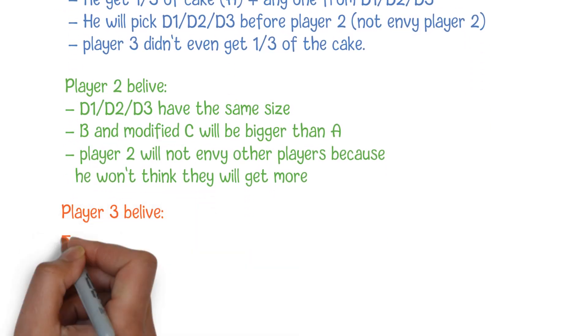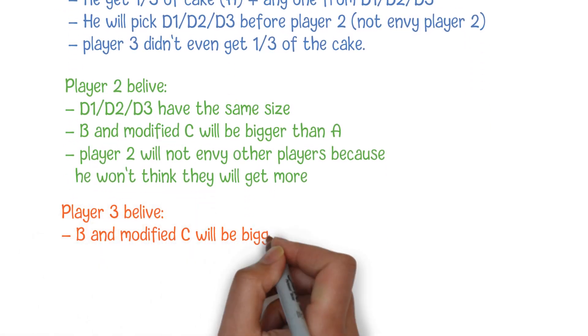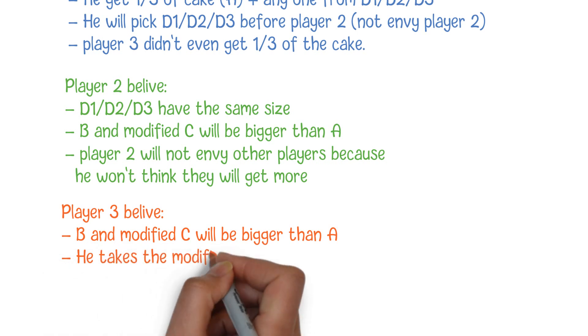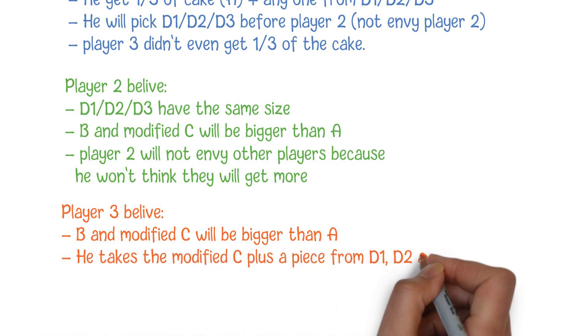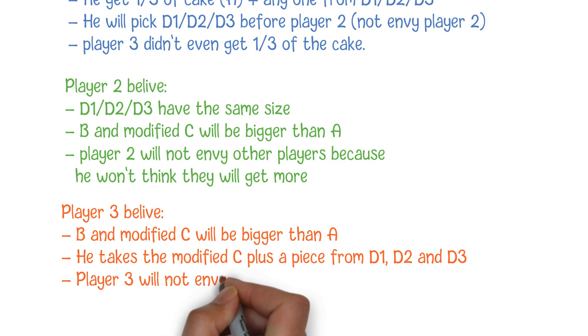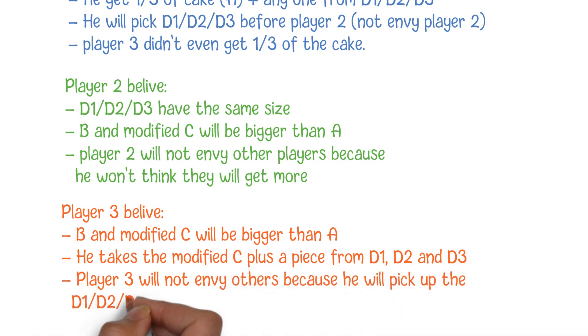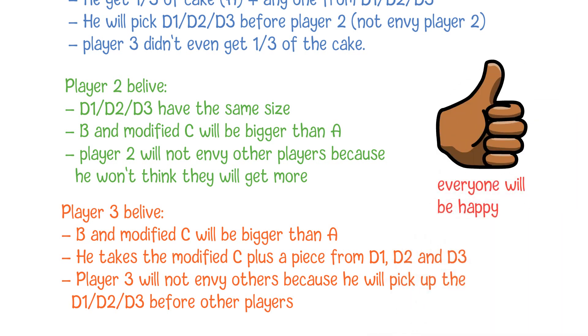For player 3, he will also think B and modified C will be bigger than A. He takes the modified C plus a piece from D1, D2 and D3. Since he will pick up the small piece before other players, he will not envy them. For now, everyone picks up their own parts and everyone will be happy.